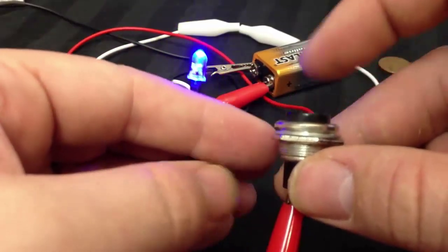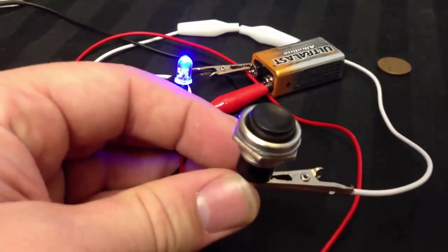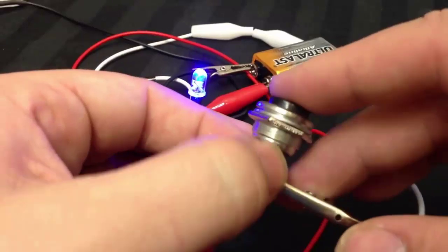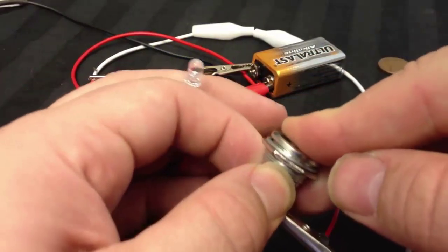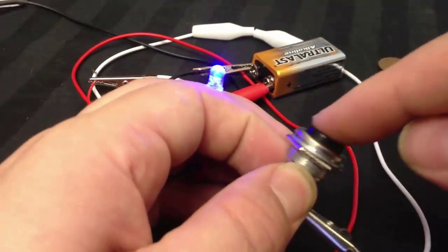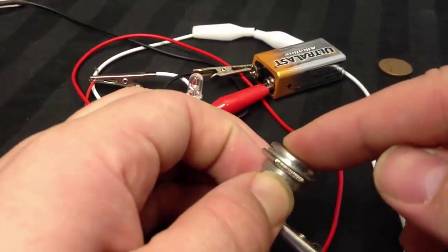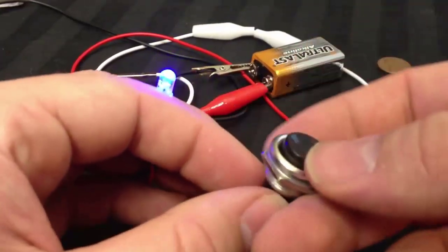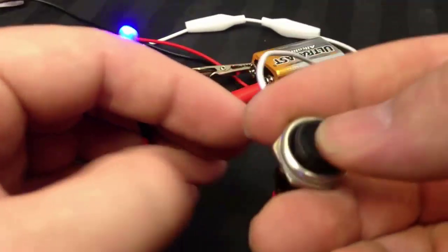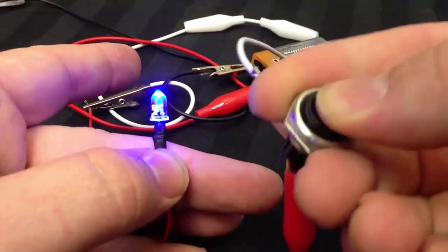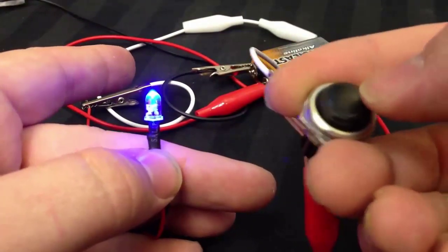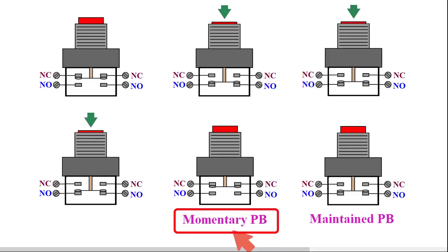Here is a short video clip showing how a momentary push button works. A LED is connected with the NC contact of this push button. When it is pressed, the LED is off; when the push button is released, the LED is on. When we use a momentary push button in PLC, the operation will be a little different — a latching system needs to be introduced.